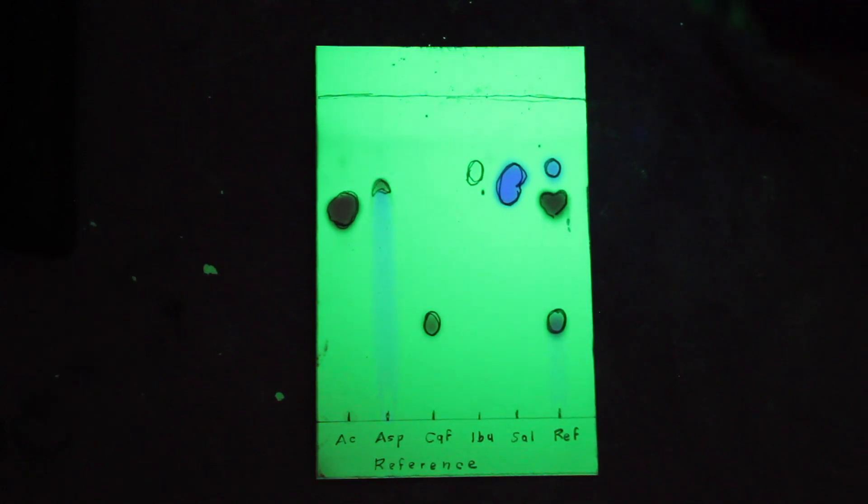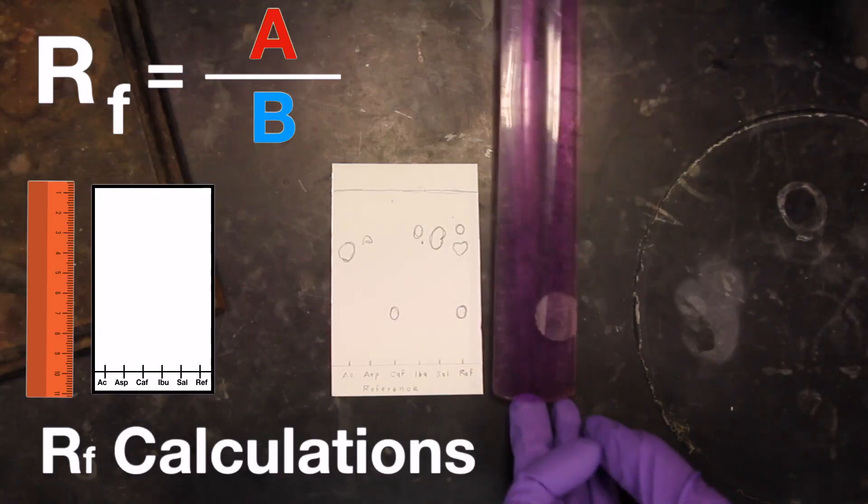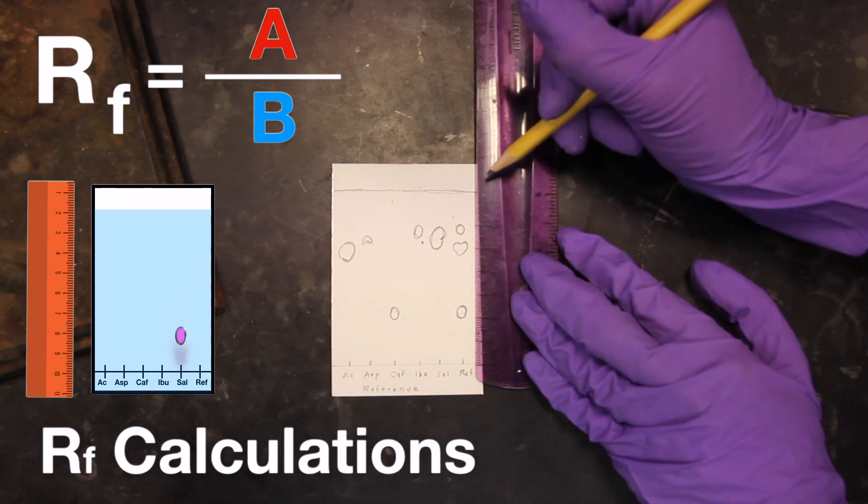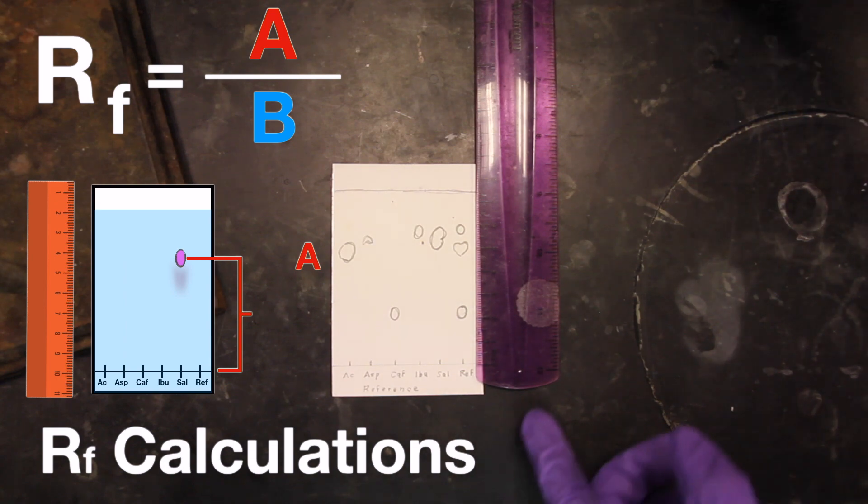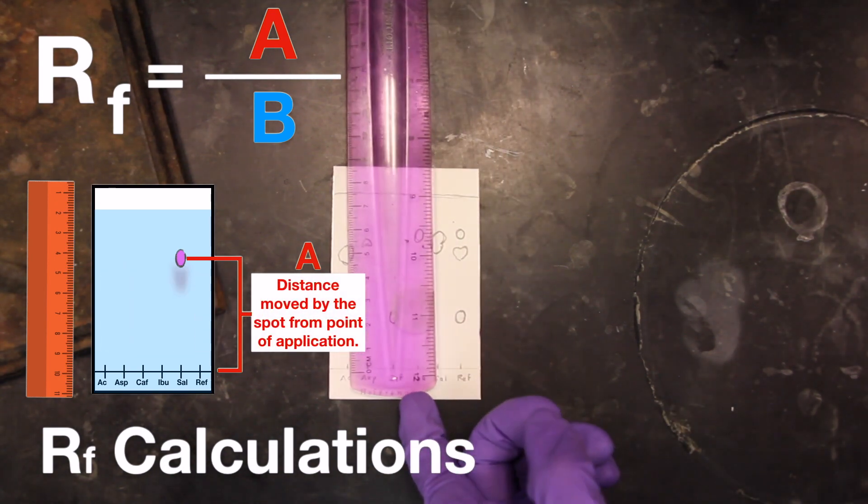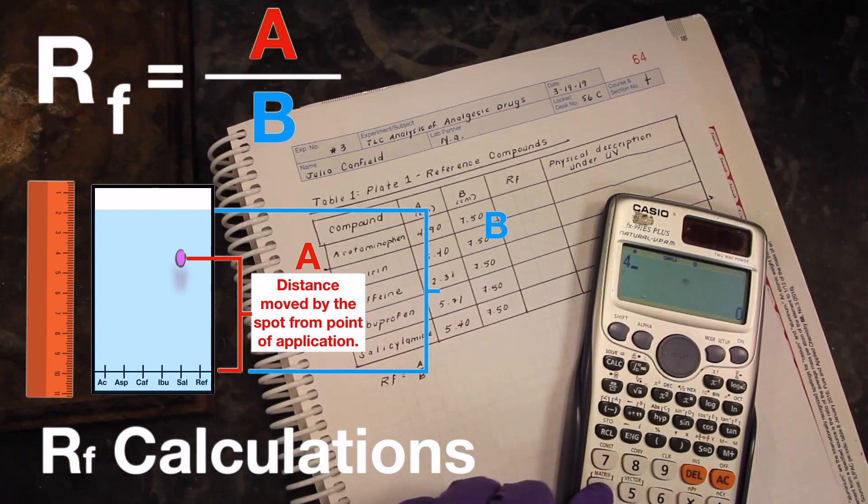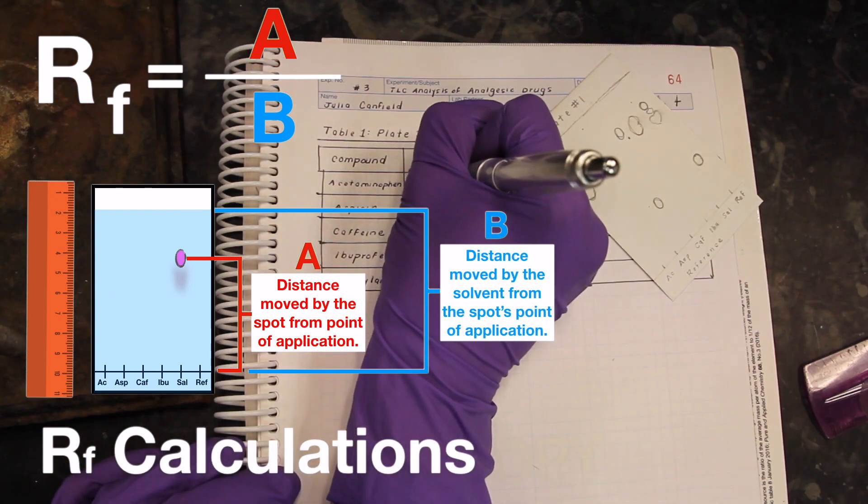Next, using a ruler marked in millimeters, you are going to measure the distance that each spot has traveled relative to the solvent front. To do so, calculate the RF value for each spot using the equation RF equals A over B, where A is the distance moved by the spot from point of application and B is the distance moved by the solvent from the spot's point of application. All RFs should be equal to or less than 1.